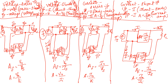These are the different types of feedback networks. Voltage series is also called series-shunt feedback or voltage amplifier. Voltage shunt feedback is also called shunt-shunt feedback or trans-resistance amplifier. Current series feedback is also called series-series feedback and trans-conductance amplifier. Current shunt feedback is called shunt-series feedback and is used as a current amplifier.